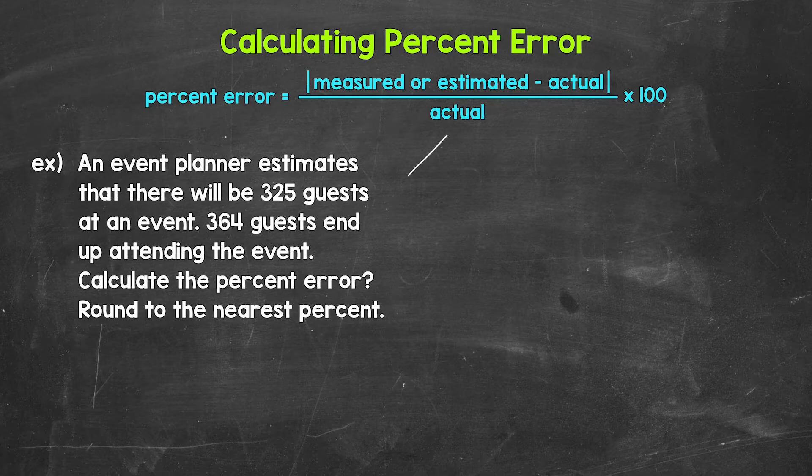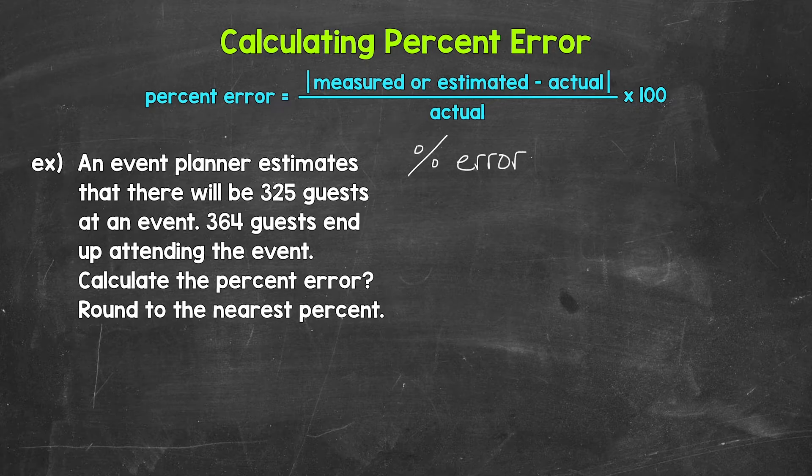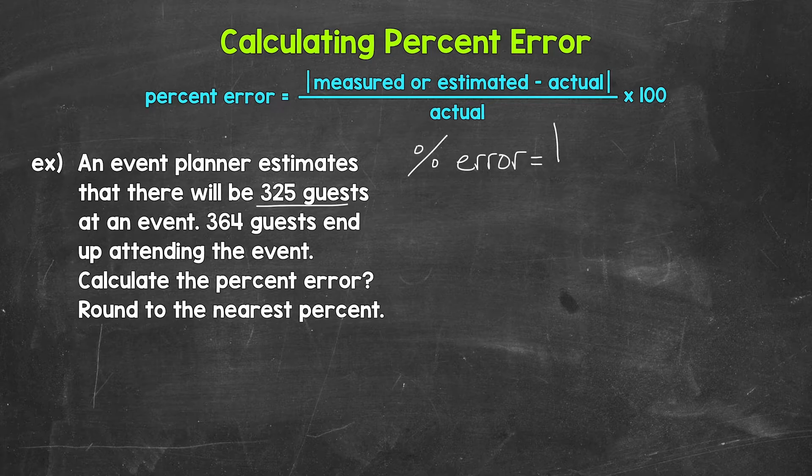So let's set this up. We have percent error equals the absolute value of the estimated value. That's 325 minus the actual value.